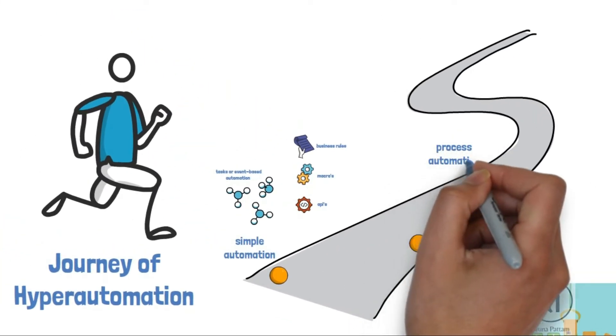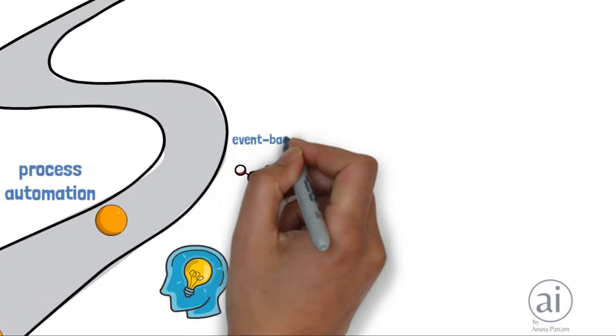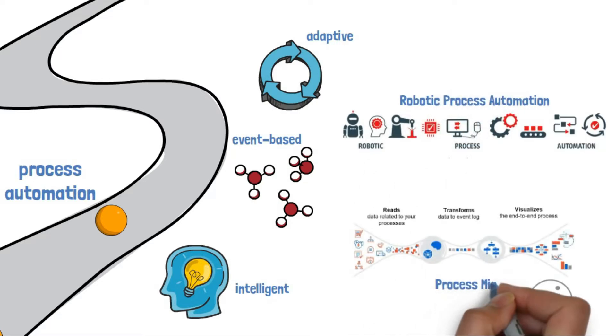Next, evolution saw process automation, which was intelligent, event-based and adaptive, such as robotic process automation and process mining.